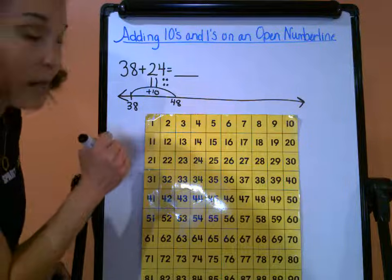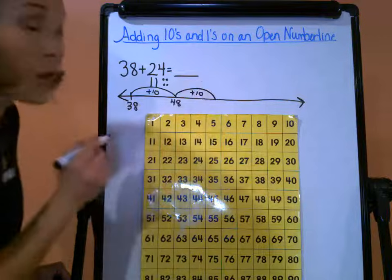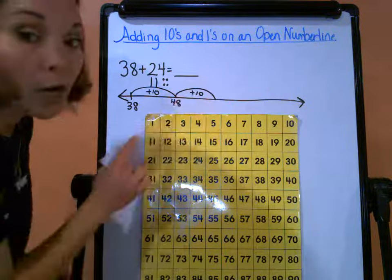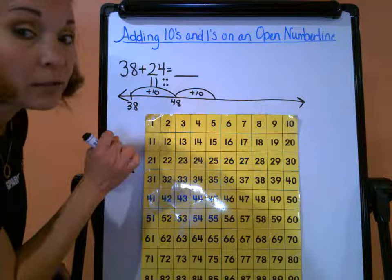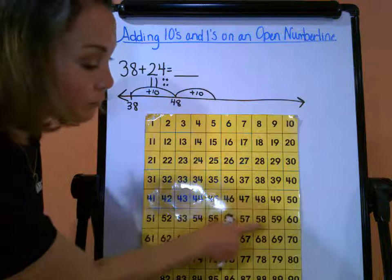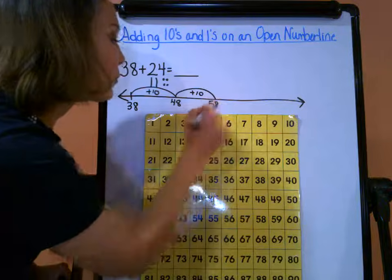Now I need to go the other ten, so that's another big hop, another plus ten. So we'll go from 48, ten more. Remember, only that tens place is changing. 48, we're going to figure it out—one more ten is 58. Okay.